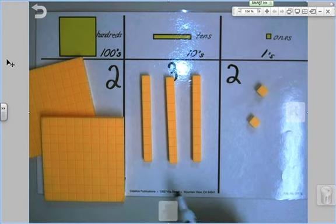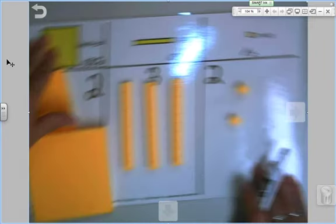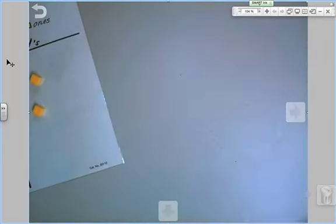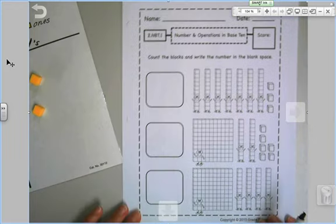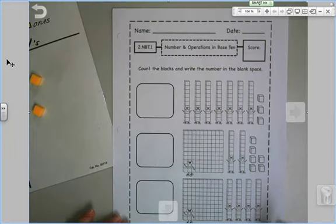The answer to how many cubes I have here, how many blocks, the answer would be 232. So what you guys are going to do today is you're going to get a piece of paper that looks like this. You're going to write your name on it and today's date.